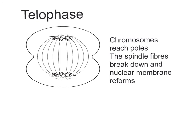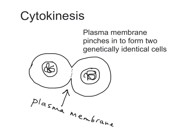In telophase, the chromosomes will reach the opposite poles of the cell. The spindle fibres will break down and the nuclear membrane reforms. Finally, in cytokinesis, the plasma membrane will pinch in to form two genetically identical cells.